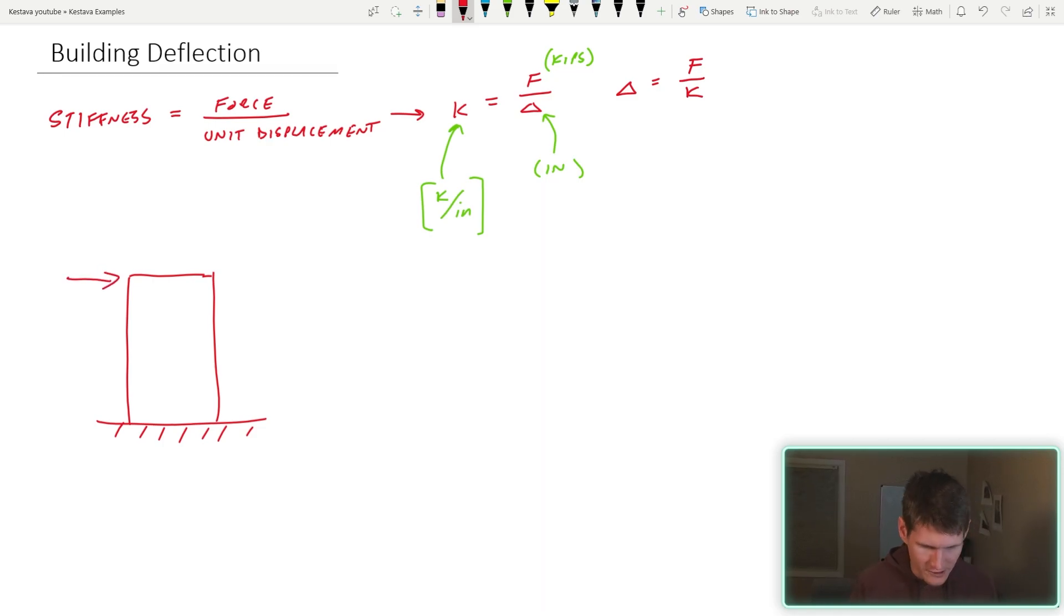So whether it's all concrete and it's walls or it's steel and it's brace frames or it's moment frame, all of the material properties and the geometry of your vertical lateral elements contribute to the overall stiffness of the building. Every building has a different stiffness unless you build the exact same building right next to each other. Force is the force that is loading the building laterally. And then when that happens, the building undergoes a unit displacement or it moves under that load some amount, which is delta.